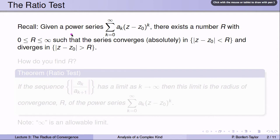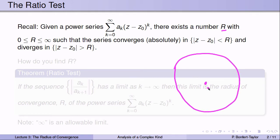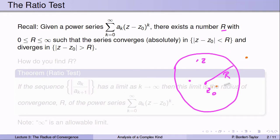Recall what we proved last class. Given the power series of this form — the sum of a_k times (z minus z_0)^k, with the a_k's as complex numbers — there exists a number R between zero and infinity, where both zero and infinity are allowable, such that the series converges absolutely for all z within distance R of z_0, and diverges for all z whose distance from z_0 is bigger than R. On the boundary, we had no conclusive answer — either convergence or divergence could happen. But how do you find this R?